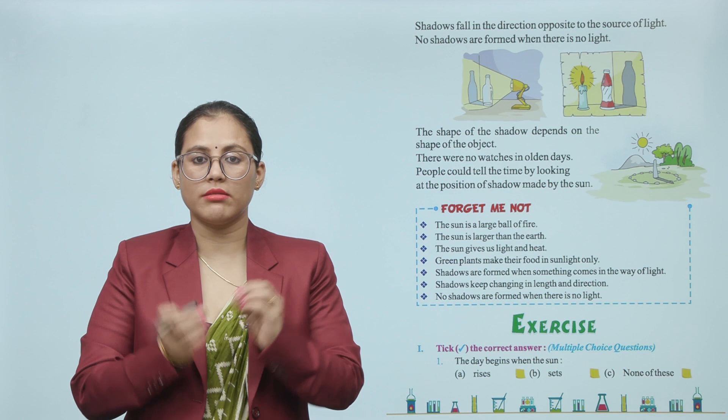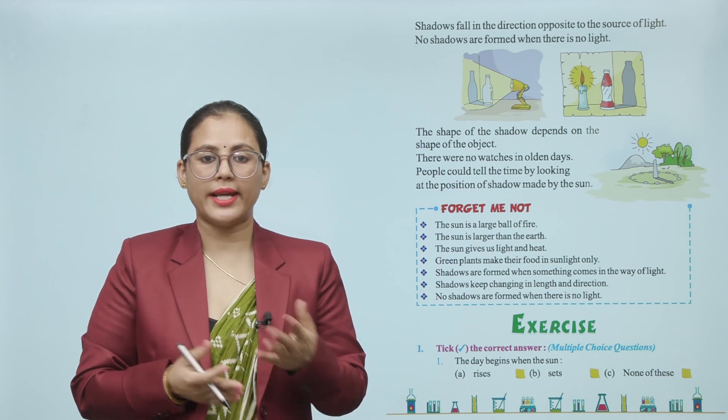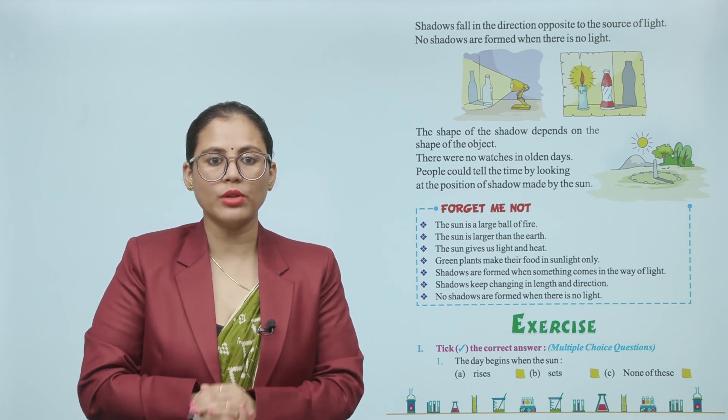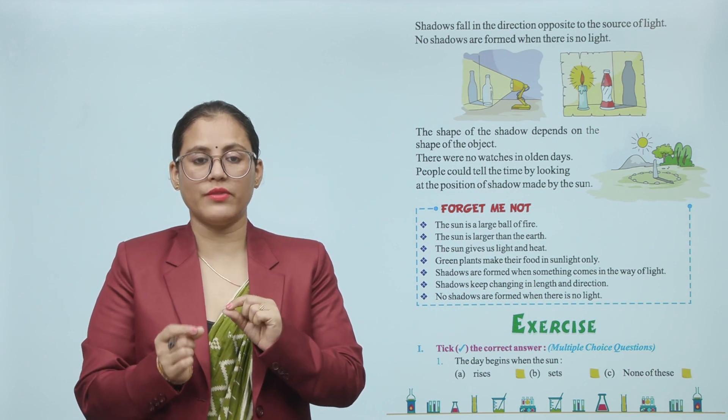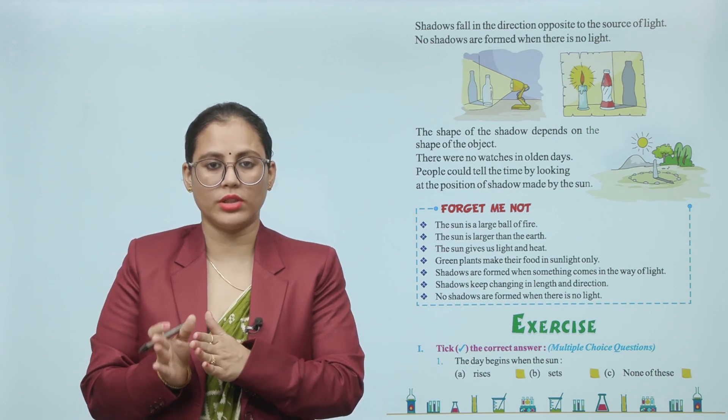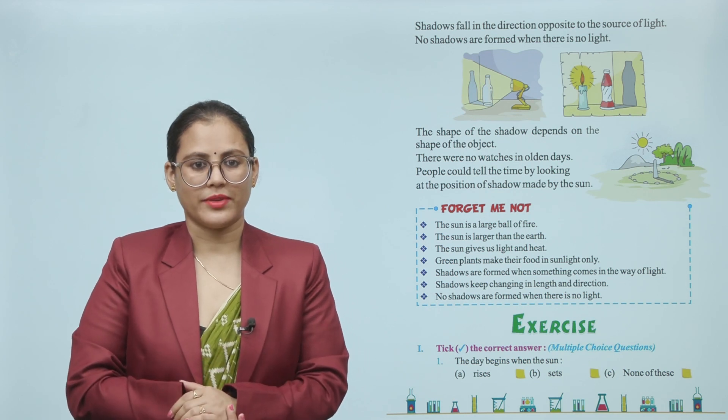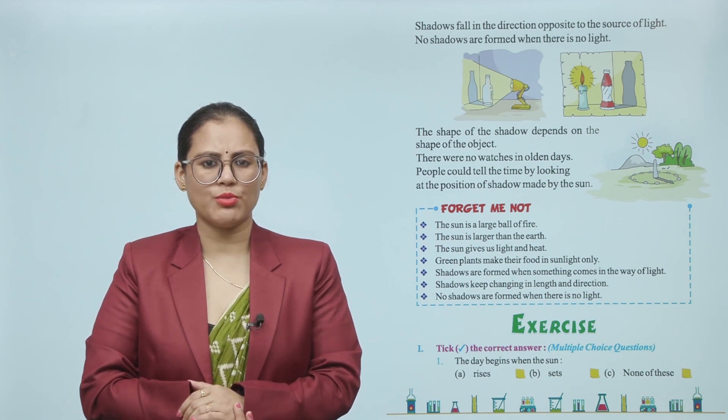People could tell the time by looking at the position of the shadow made by the Sun. The shape of the shadow depends on the object's shape. Earlier there were no watches, so people could tell the time by looking at the position of the shadow caused by the sun.